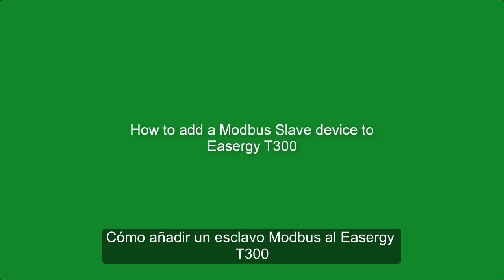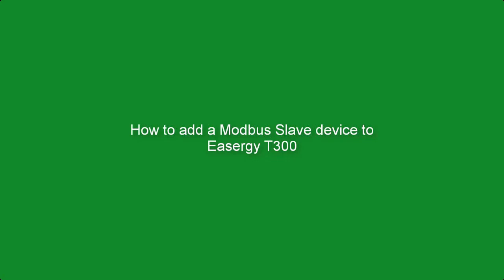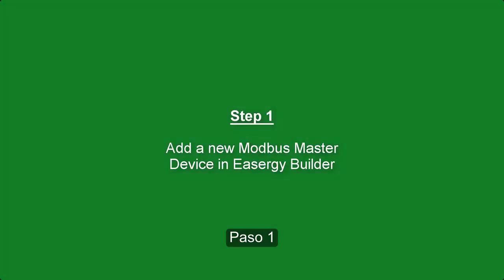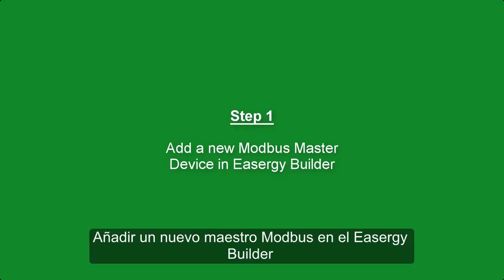How to Add a Modbus Slave Device to ESERGY T300. Step 1: Add a new Modbus Master Device in ESERGY Builder.